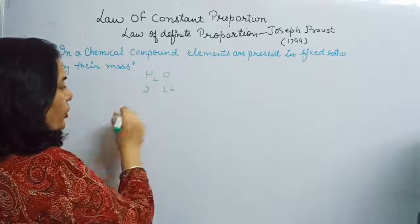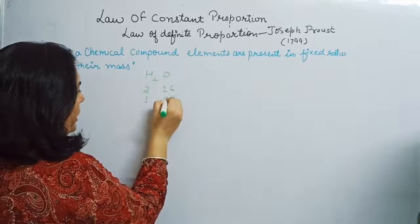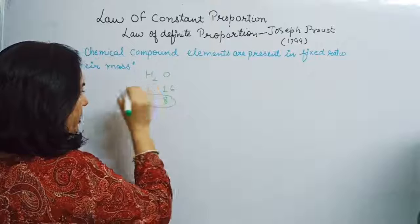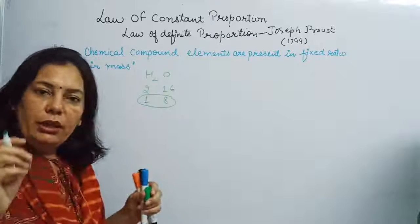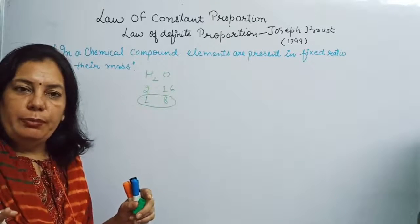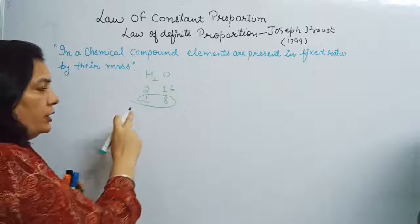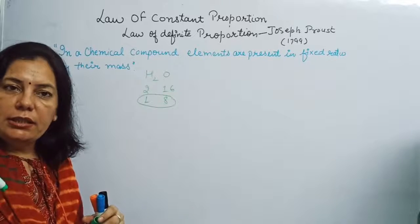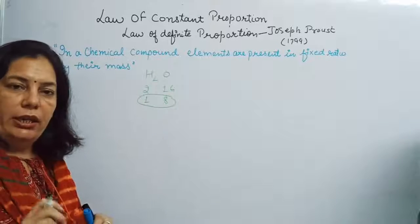That ratio is H2O and the mass ratio is 2:16, which is equal to 1:8. Whether the sample is collected from any of these sources, if it is pure, then hydrogen and oxygen will always be present in the ratio 1:8.